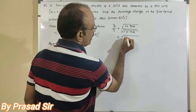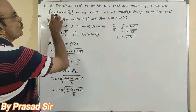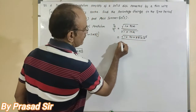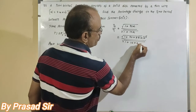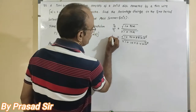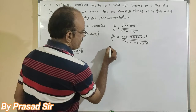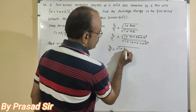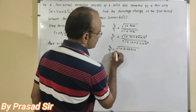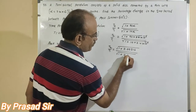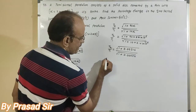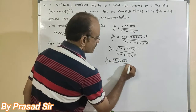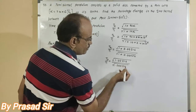Substituting alpha equal to 2.4 into 10 to the power of minus 5: T2 by T1 equals square root of 1 plus 90 into 2.4 into 10 to the power of minus 5, divided by square root of 1 plus 10 into 2.4 into 10 to the power of minus 5. This gives square root of 1.00216 divided by square root of 1.00024.